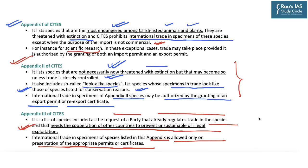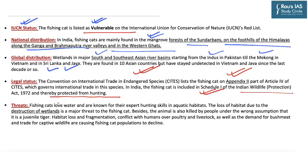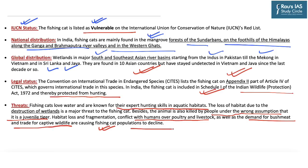Regarding threats, fishing cats love water and are well known for their expert hunting skills in aquatic habitats. Loss of aquatic habitats including wetlands and mangroves is a major threat to their survival. These animals are also killed by people under the wrong assumption of being a small tiger or juvenile tiger. Other threats include habitat loss and fragmentation, conflict with humans over poultry and livestock, as well as demand for bushmeat and trade for captive wildlife, which are also causing fishing cat populations to decline.